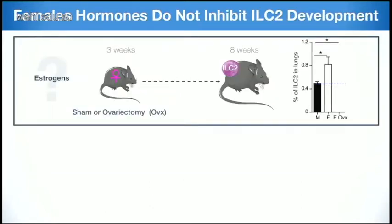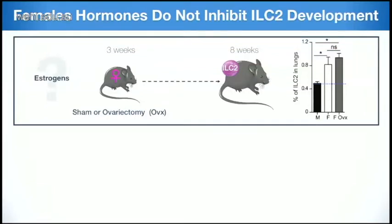The next question was trying to understand why we have these differences. Our first hypothesis was that estrogens are boosting ILC2 in females, as estrogen is well-known to have pro-inflammatory effects. To test this, we ovariectomized the mice — removing the ovaries to remove the main source of female hormones. But whether the females were ovariectomized or not, it had no effect on the ILC2, either in numbers or phenotype.